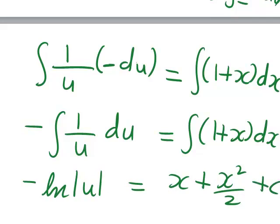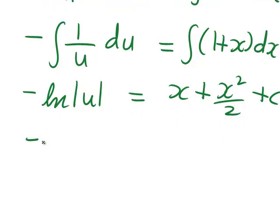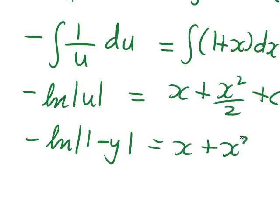I'd then bring back u, which was 1 minus y, so the left-hand side is negative ln|1 minus y|, and the right-hand side is the form we saw before.